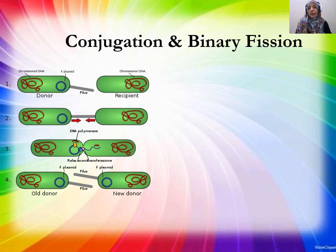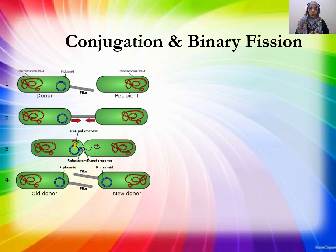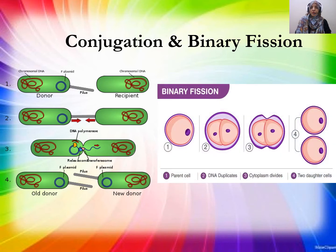This is similar to sexual reproduction — two organisms come together, exchange genetic material, then separate. The F-negative organism becomes F-positive. In binary fission, it is simply cell division where one cell divides into two different organisms.